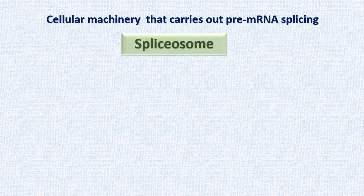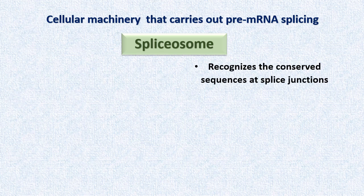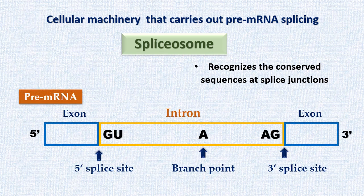Now let's talk about the cellular machinery that carries out the process of RNA splicing. Pre-mRNA splicing is carried out by cellular machinery known as spliceosome. Spliceosome recognizes the conserved sequences at the splice sites.